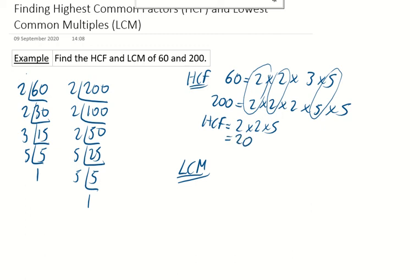Okay, for the lowest common multiple, slightly different method. You do the same bit over here, your ladder method. But then when you get your numbers write them in index form. So 2 squared times 3 times 5. And likewise your 200 will be 2 to the power of 3 times 5 to the power of 2.